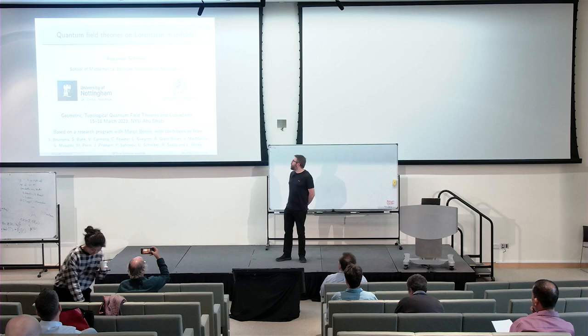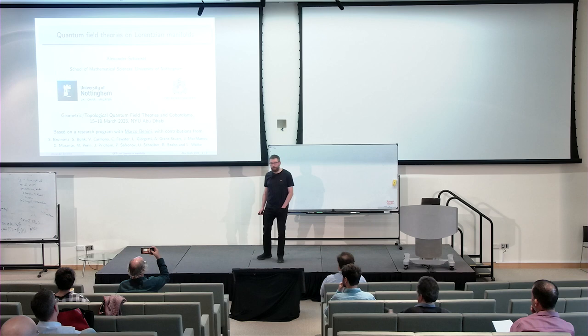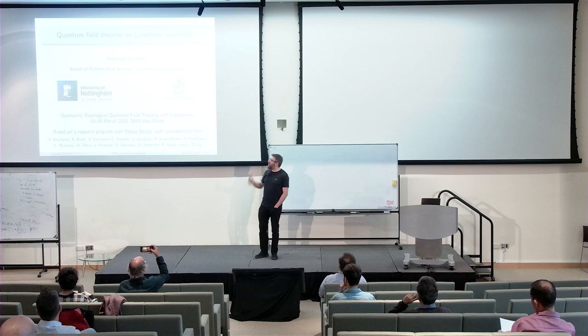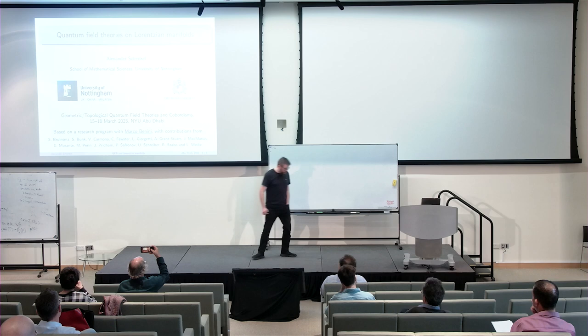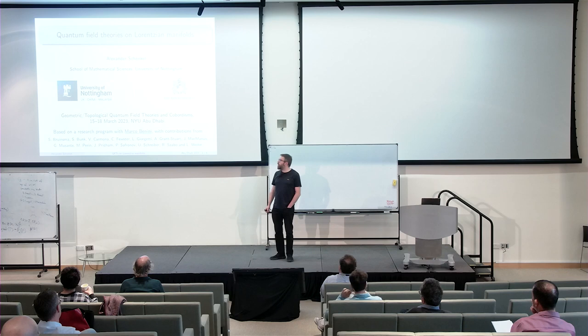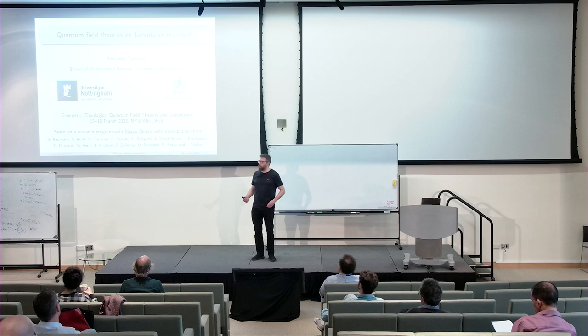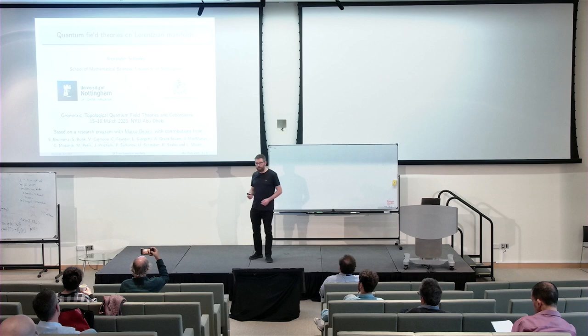I would like to speak about a research program I've been following for a few years: studying higher categorical structures in quantum field theories defined on Lorentzian manifolds. Why Lorentzian manifolds? It's rooted in physics — Lorentzian manifolds describe gravitation and have very different features than Riemannian manifolds. You should think of QFTs on Lorentzian manifolds as quantizations of hyperbolic PDEs, while Riemannian QFTs are more like elliptic PDEs.